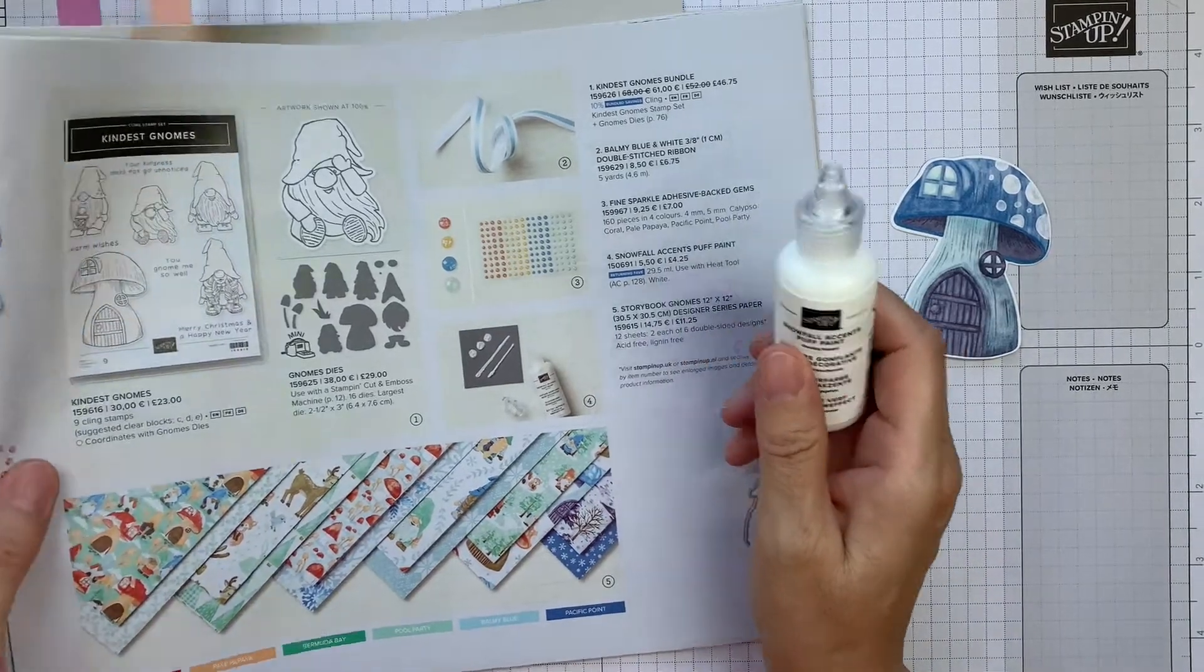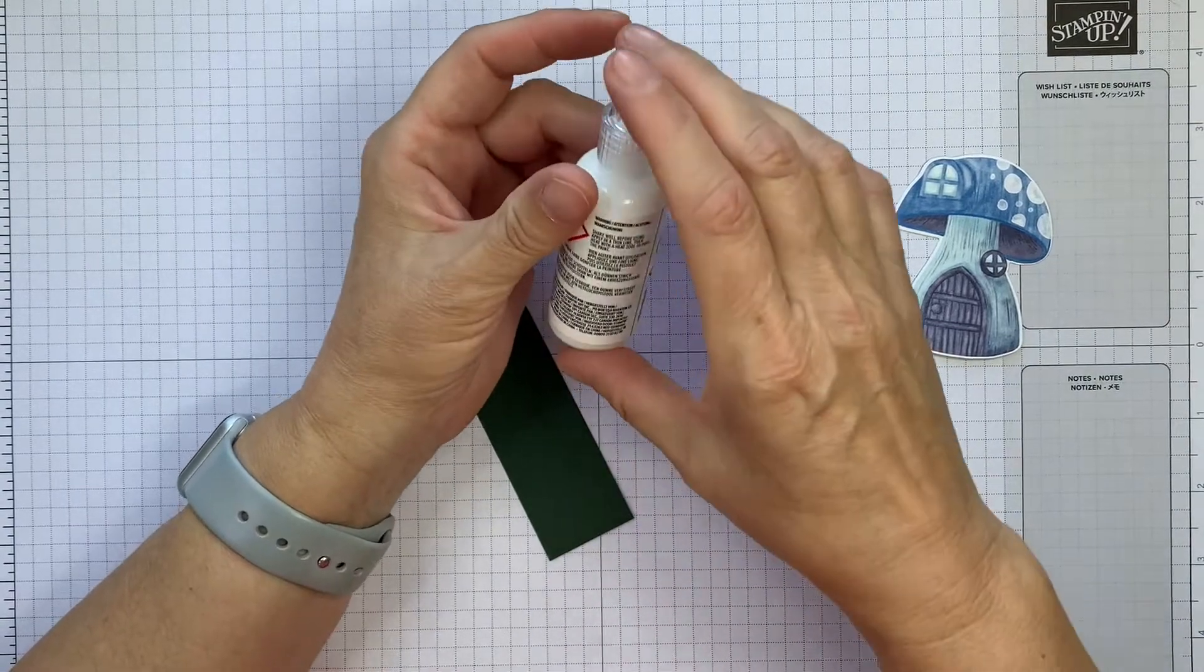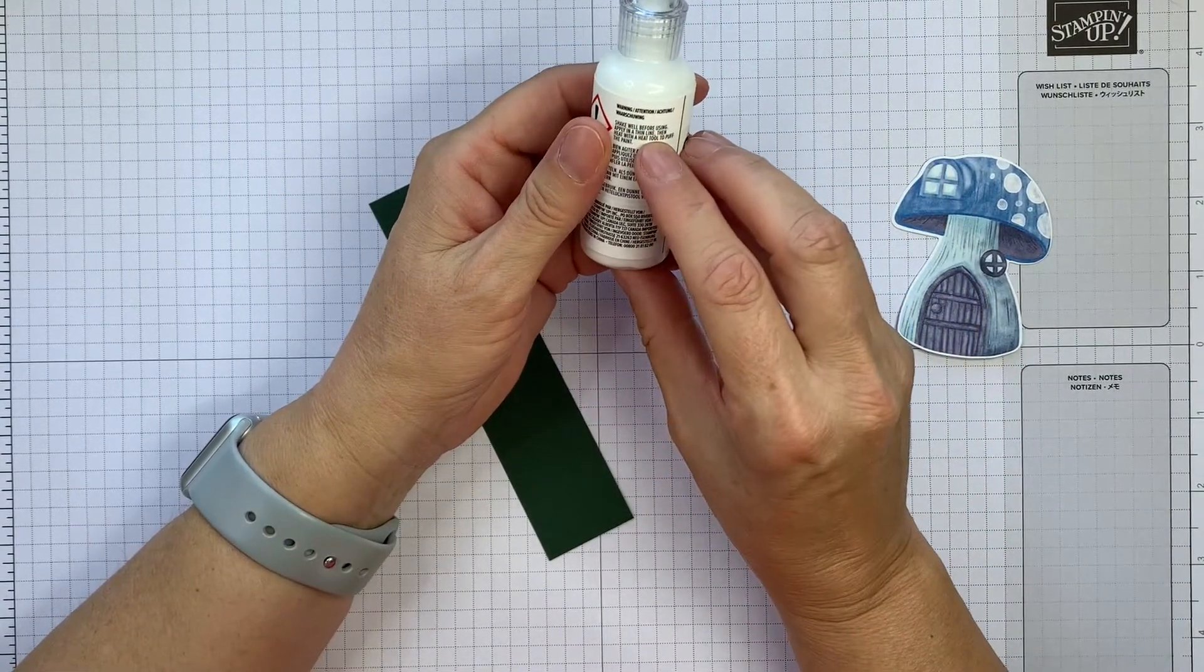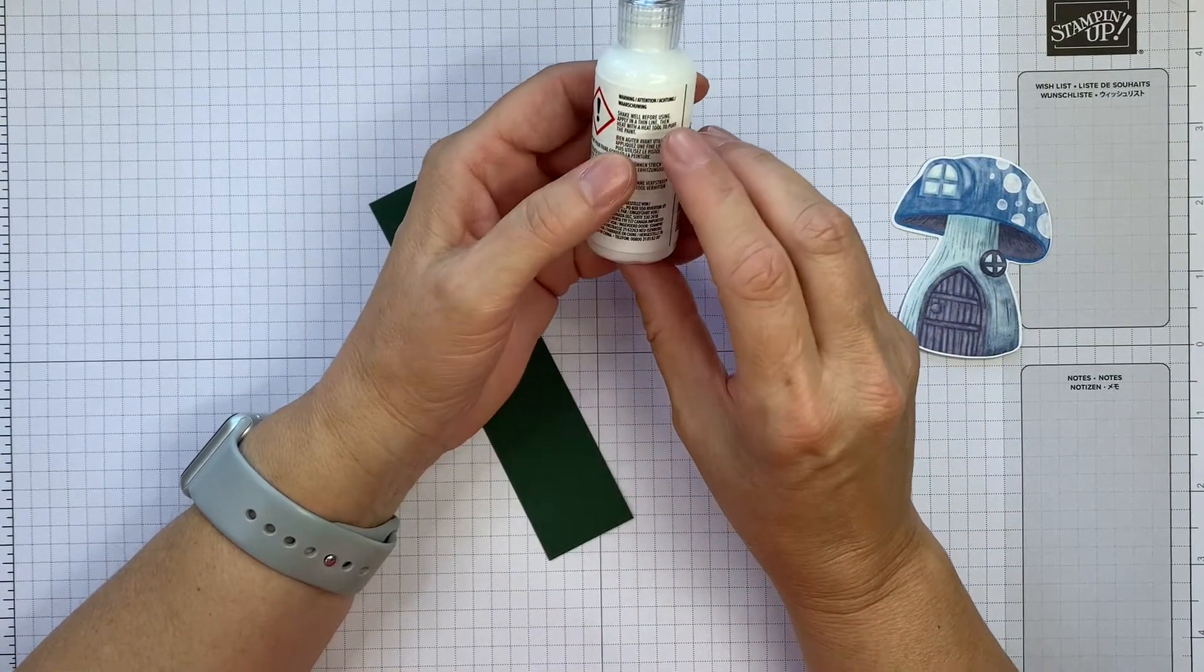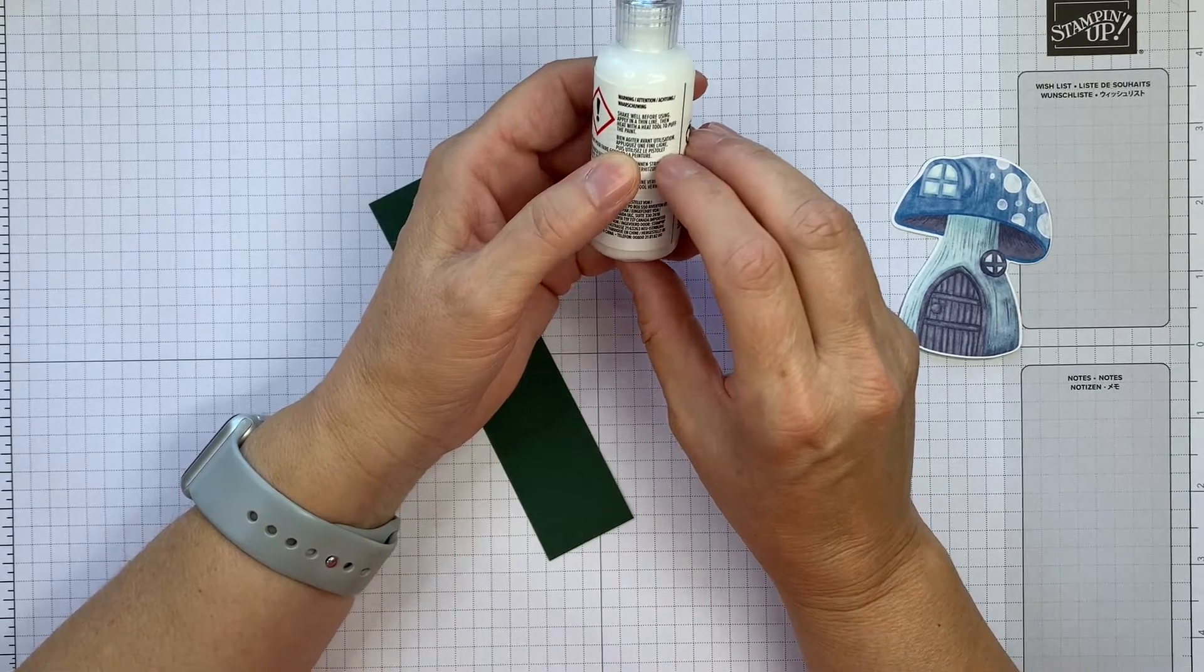You can buy it separately if you prefer. On the container it says shake well before using and apply in a thin line, then heat with a heat tool to puff the paint.